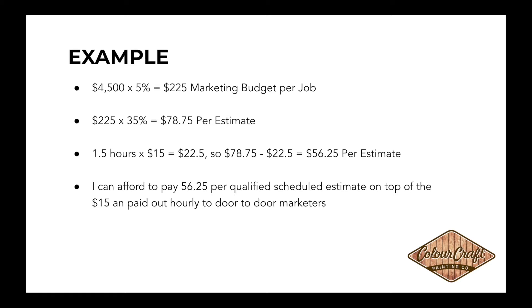Based on these results, a marketer earning $15 an hour plus $56 per estimate, getting an estimate every hour and a half, would be doing very well — making about $50 an hour if well-trained. That's the job of the marketing manager: to train the team to deliver these results. With this average job size and sales ratio this is a very good job for someone skilled at this. From here you write up your job post and market how much you can afford to pay.